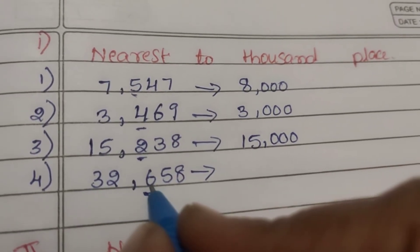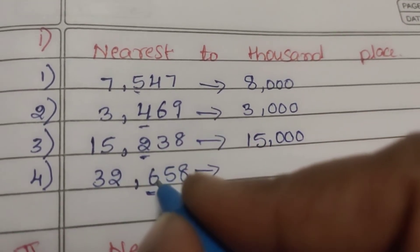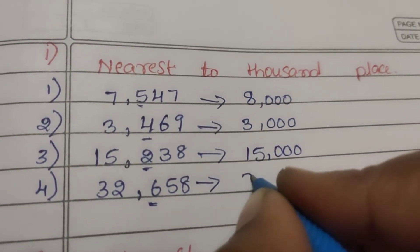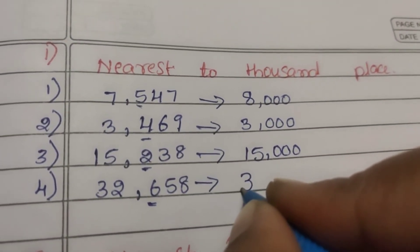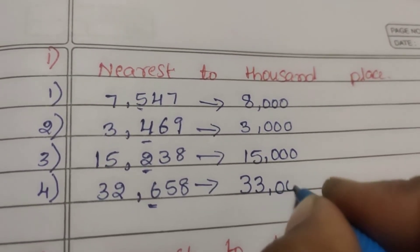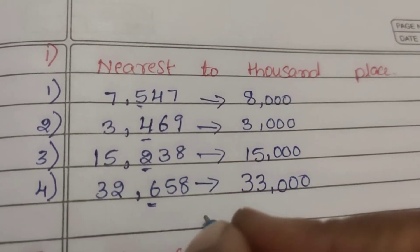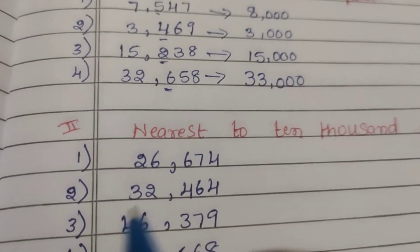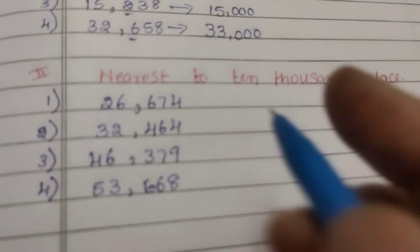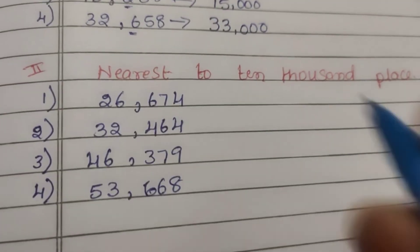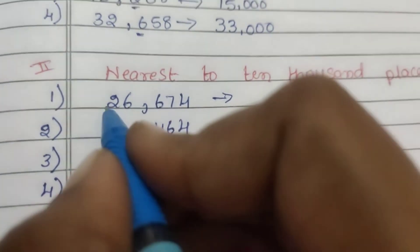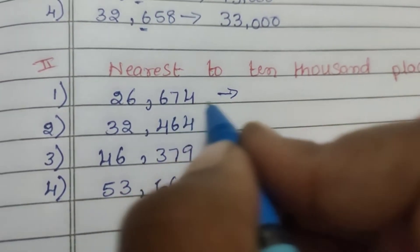32,658. The hundreds digit is 6, which is 600 — greater than 500. So, 32,658 rounds to 33,000. Next: 2,000, 10,000.